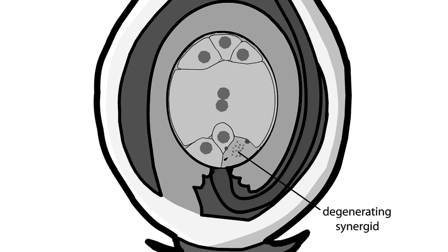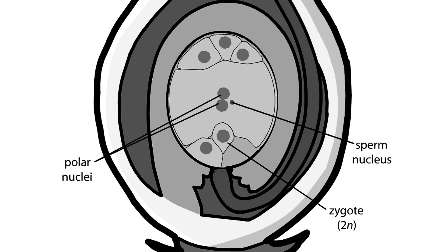The synergids degenerate as one of the two sperm cells fertilizes the egg cell, producing a diploid 2N zygote. The second sperm cell fuses with both of the polar nuclei, fertilizing them to produce an unusual triploid 3N cell. As the zygote develops into an embryo, the triploid cell develops into the endosperm, which serves as the embryo's food supply.